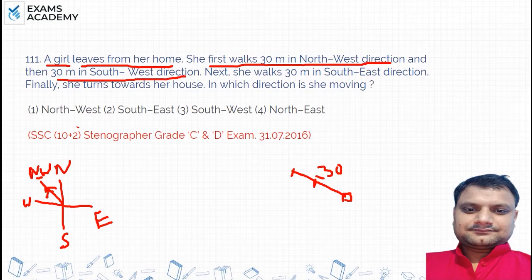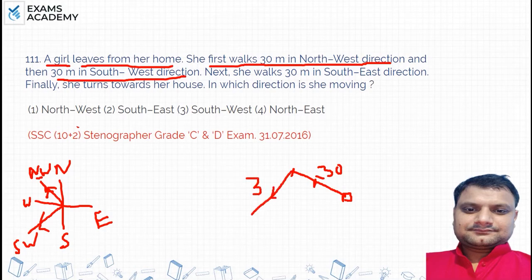South-west direction — where is that? If I go in the south-west direction from this point, this is your south-west direction. So she goes here — 30 meters again. This is the new point she has reached.